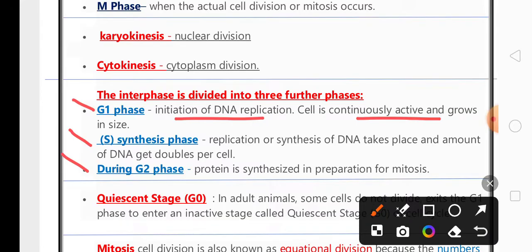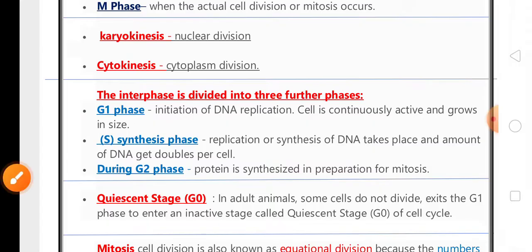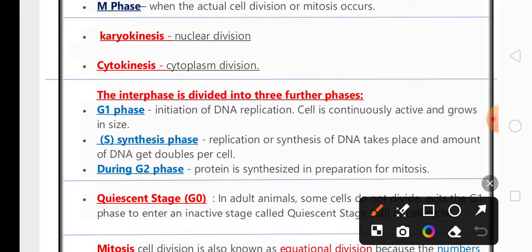In the second sub-phase of interphase, S phase is called the synthesis phase. Here replication or synthesis of DNA takes place, or we can say the amount of DNA gets doubled in the cell. In G2 phase, there is synthesis of protein which is very important for mitosis.